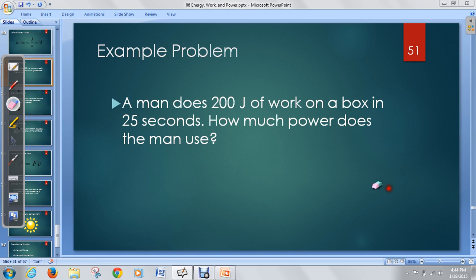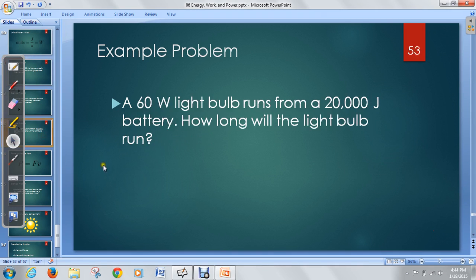Okay, let's see if you can do one on your own. So, if you're making this up for participation, see if you can answer this question. A 60 watt light bulb runs from a 20,000 joule battery. How long will the light bulb run? Okay, so you're going to use the same equation. See if you can figure out the time.